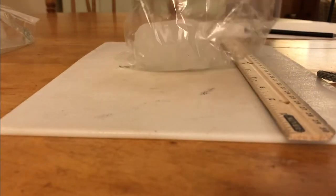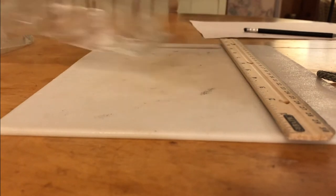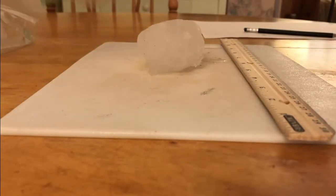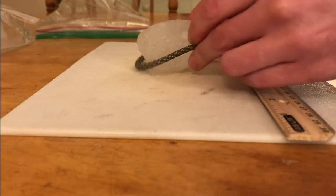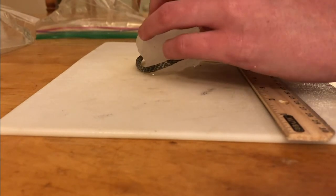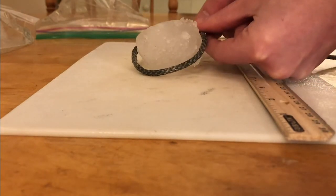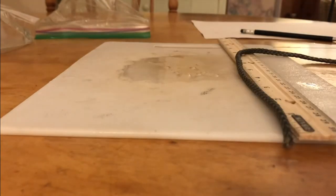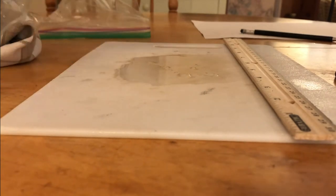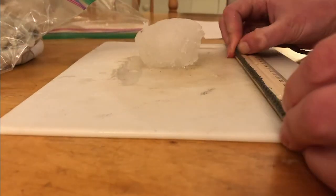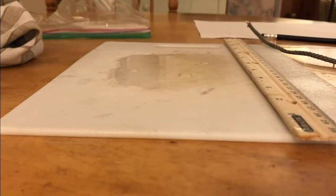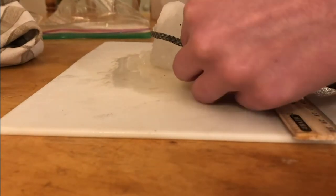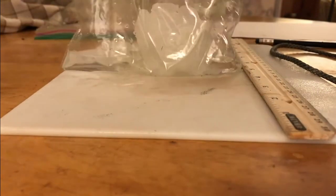Take each snowball one by one and use a string to measure around the center or circumference. Once you've wrapped it tightly around put it on a ruler to see if there's any change. Make sure that you record the new circumference for each snowball. And be careful some of them might not be spheres anymore.